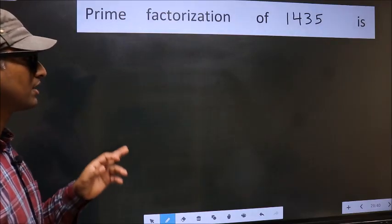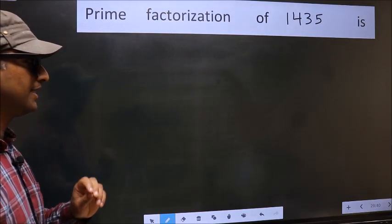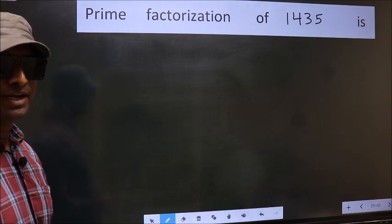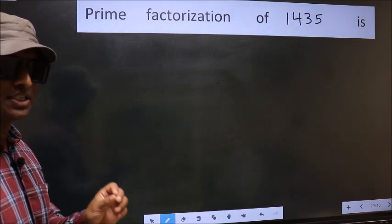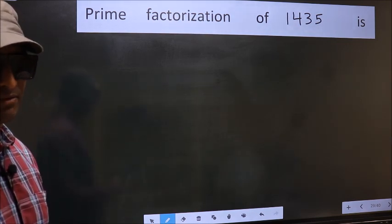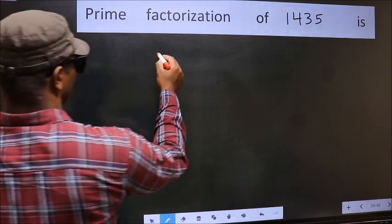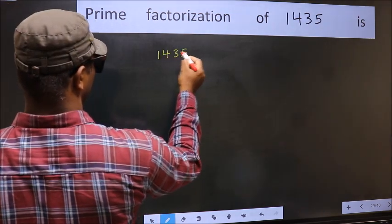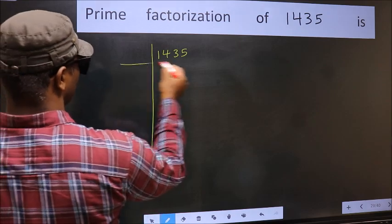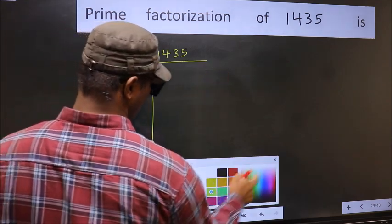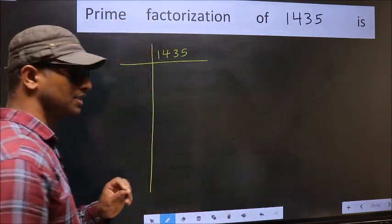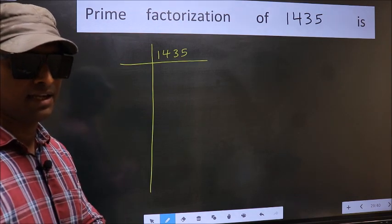Prime factorization of 1435. To do prime factorization, first we should frame it in this way: 1435. This is your step 1.